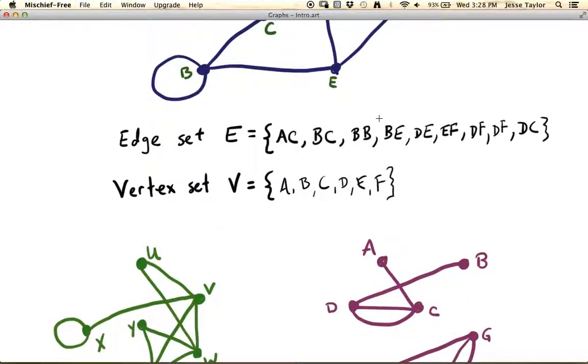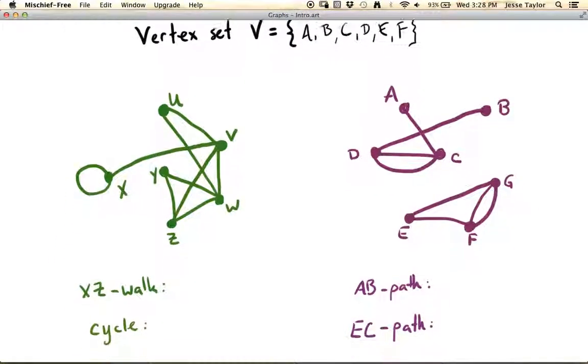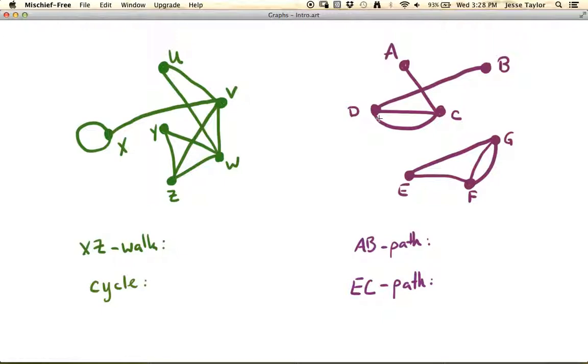So we call a graph simple if it doesn't have these things. So let's look at a couple more graphs. So neither of these graphs is simple either. See, you've got this loop here, so that means it's not simple. But without the loop, it would be a simple graph. So for example, this in green is a simple graph, whereas this is not a simple graph because of the loop. Similarly, this is not a simple graph because it has these multiple edges here in a couple of places.